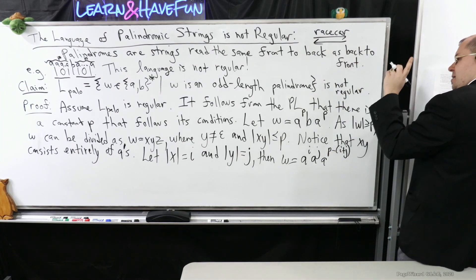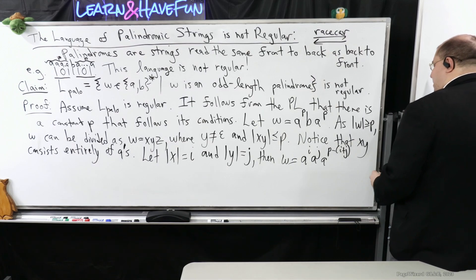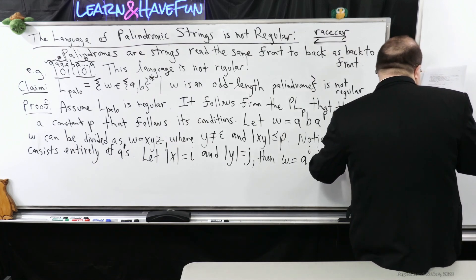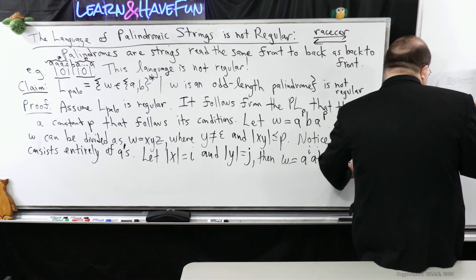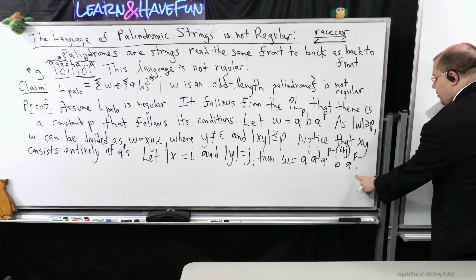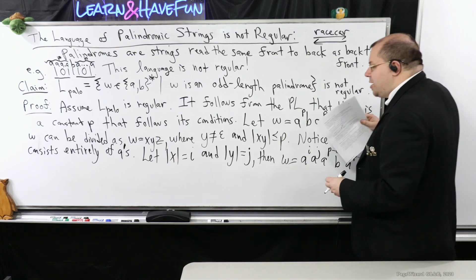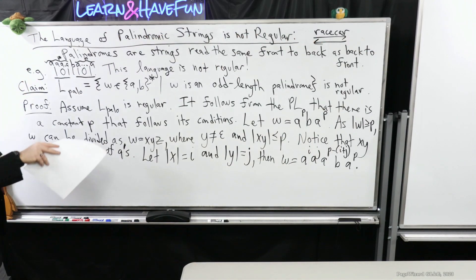Then W will look like this. It'll be A to the i, A to the j, A to the P minus i plus j because this is everything else. Remember, it's A to the P, B, A to the P. So this would be everything else for my A's. And then I have B, and then I have A to the P. That's what the string will look like. Remember, I don't have control over what i and j are.